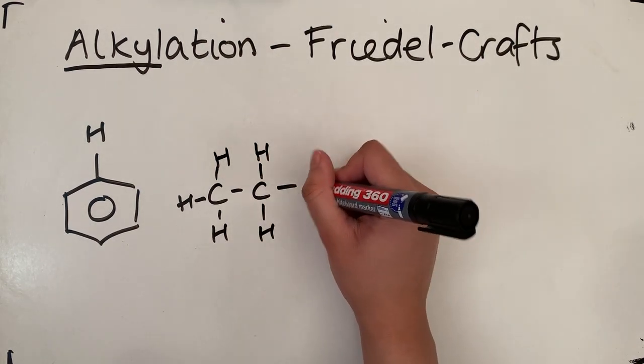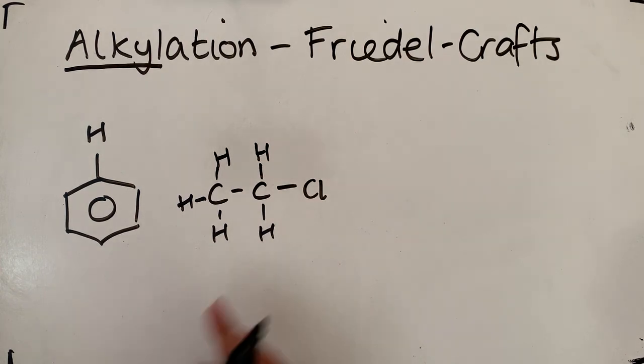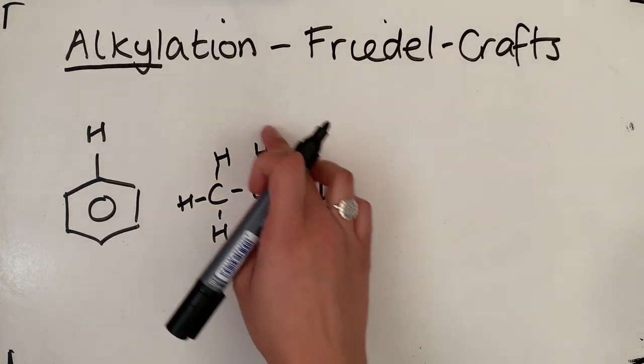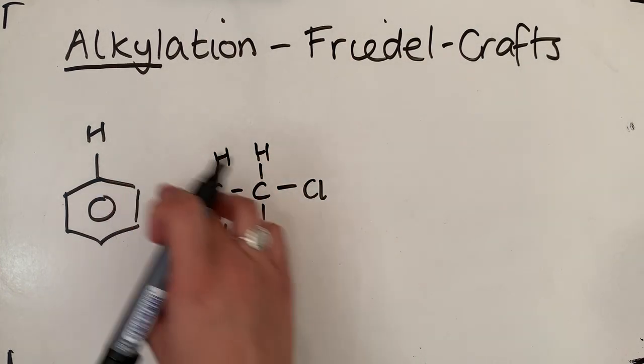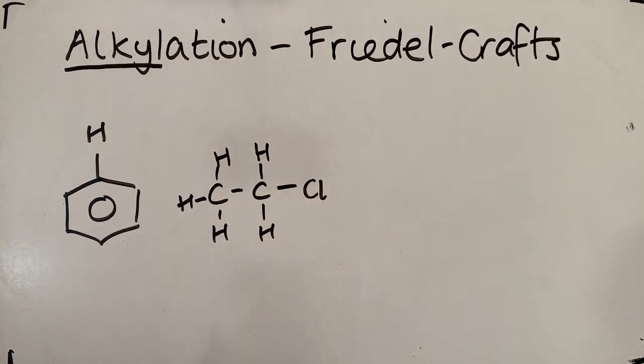So in this case, I'm just going to go for Cl at the end over here. So I've got chloroethane because I want to add this ethyl chain to my benzene ring.